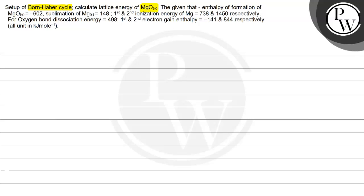Given that enthalpy of formation of MgO is minus 602, sublimation of Mg is 148, first and second ionization enthalpy of Mg 738 and 1450 respectively. For oxygen, bond dissociation energy 498, and first and second electron gain enthalpy is minus 141 and 844 respectively. All units in kilojoule per mole.